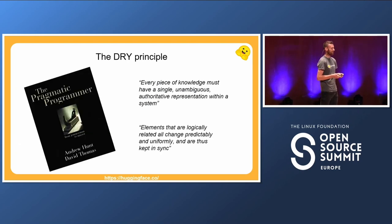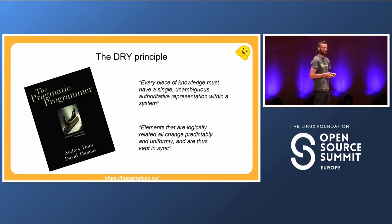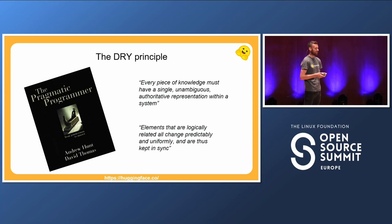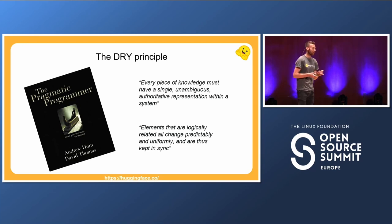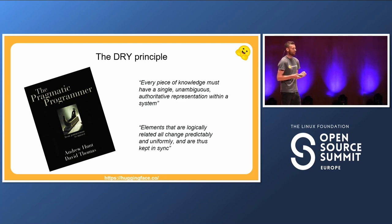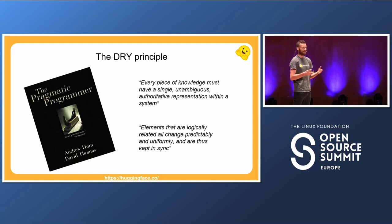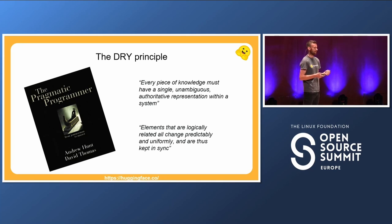Now let's talk about the DRY principle. It originates from the book The Pragmatic Programmer — a great book, highly recommended. The DRY principle can be best described by two rules. First: every piece of knowledge must have a single, unambiguous, authoritative representation within a system. What that means is: when you think about software libraries, an abstraction — which can be a function or a class — should not be copied. If you write it once, it should only exist once, and it should enforce its API or rules across the library.